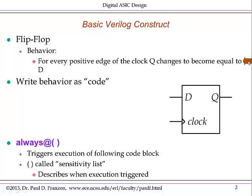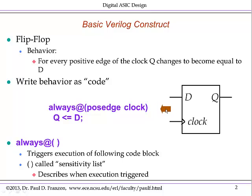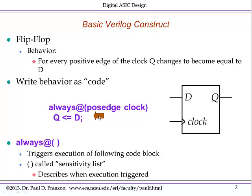We can also write this as code. Code is really just a logically syntactic, correct way of specifying things that you could write in English. This is that structure as code: always at posedge clock — that is, at each and every rising edge of the clock — the output Q becomes equal to the input D. This is a different type of assignment, but it's still assignment, and in the full course I explain the difference between this and a normal equals.